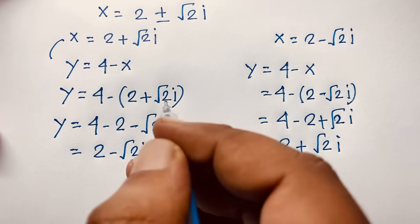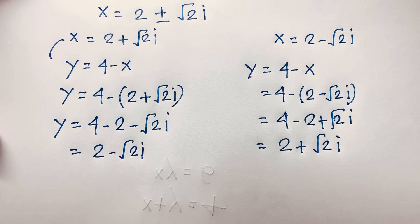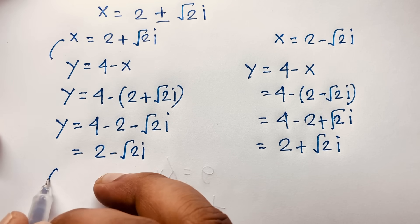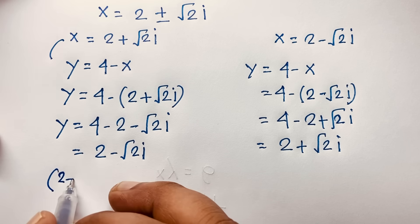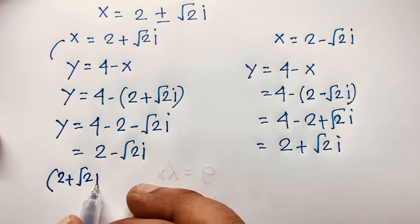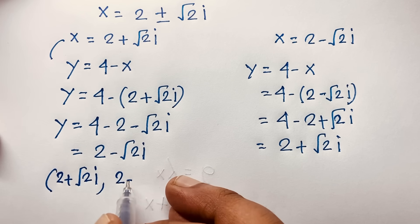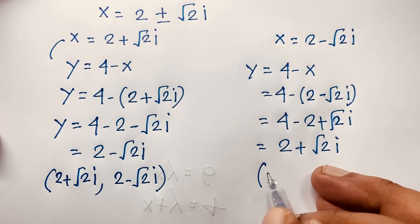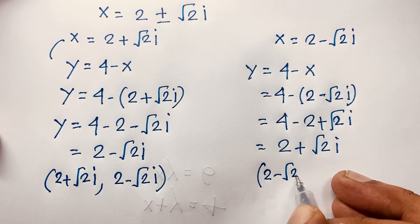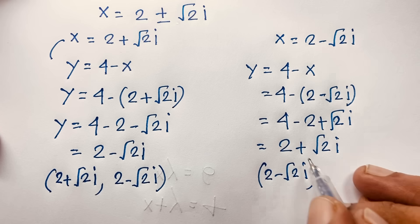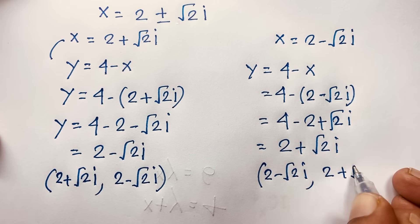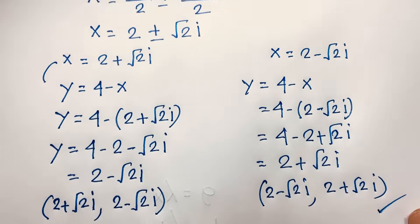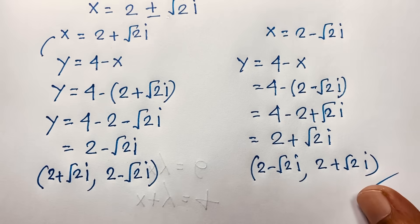So we have found our final answer. Both are complex solutions — there is no real solution. When x equals 2 plus square root 2i, then y equals 2 minus square root 2i. When x equals 2 minus square root 2i, then y equals 2 plus square root 2i.